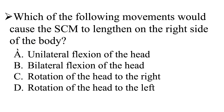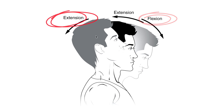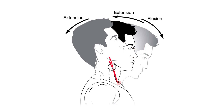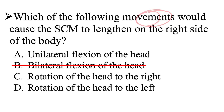This question wants us to find the movement that lengthens the sternocleidomastoid on the right side of the body. Looking at A and B: unilateral means on one side, bilateral means on both sides. When we are in a flexed position, the sternocleidomastoid's insertion is pulled closer to its origin — it shortens. When we extend, it lengthens. So bilateral flexion is not the correct answer.